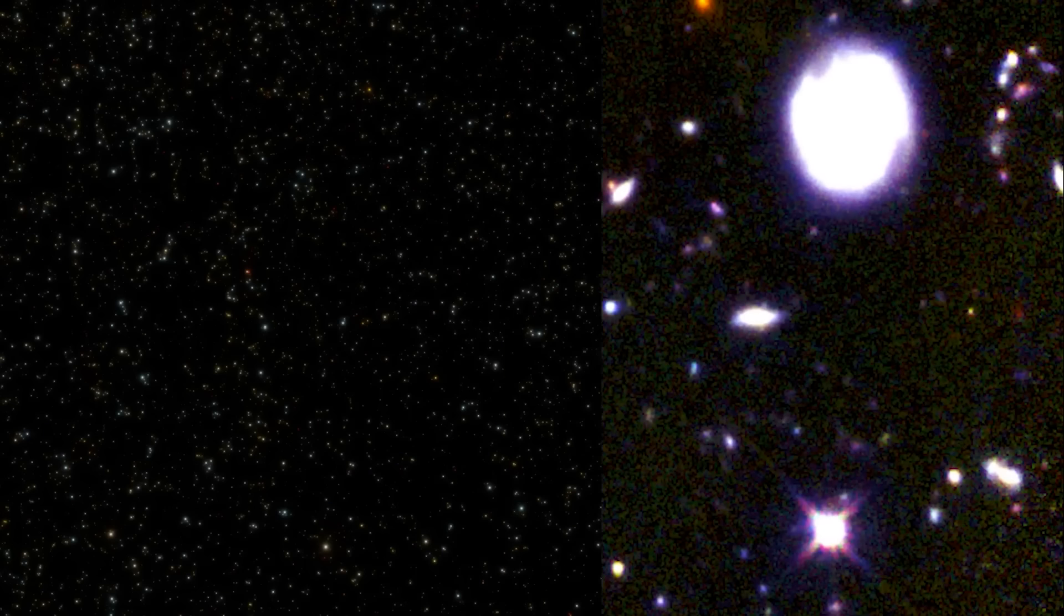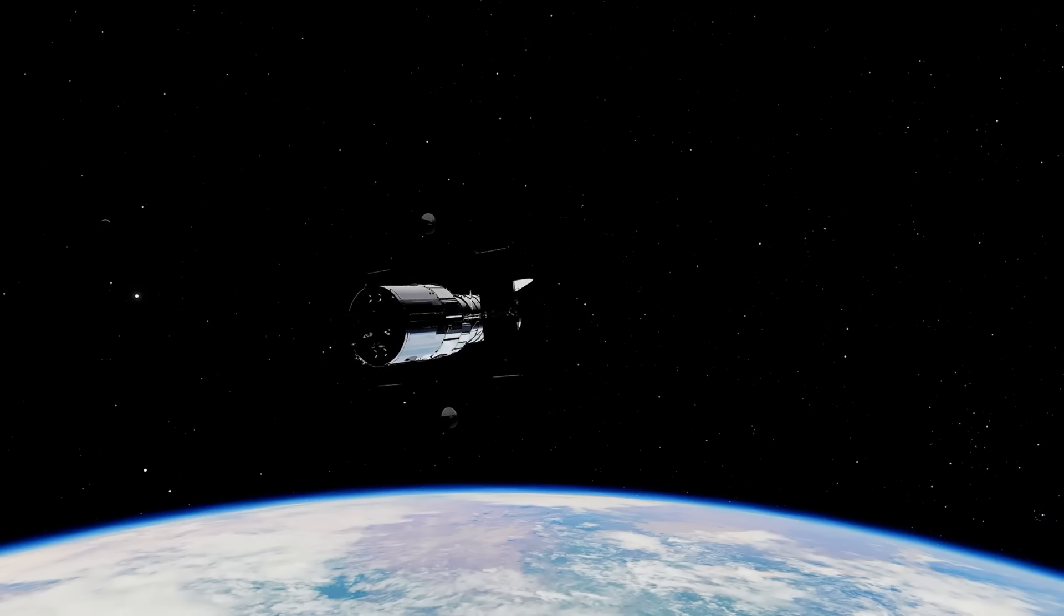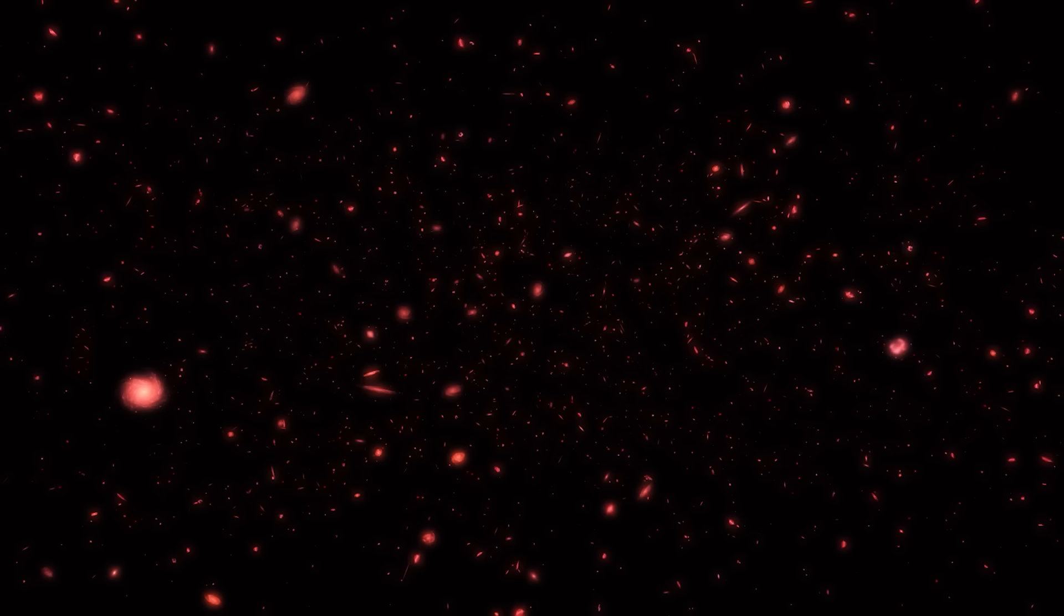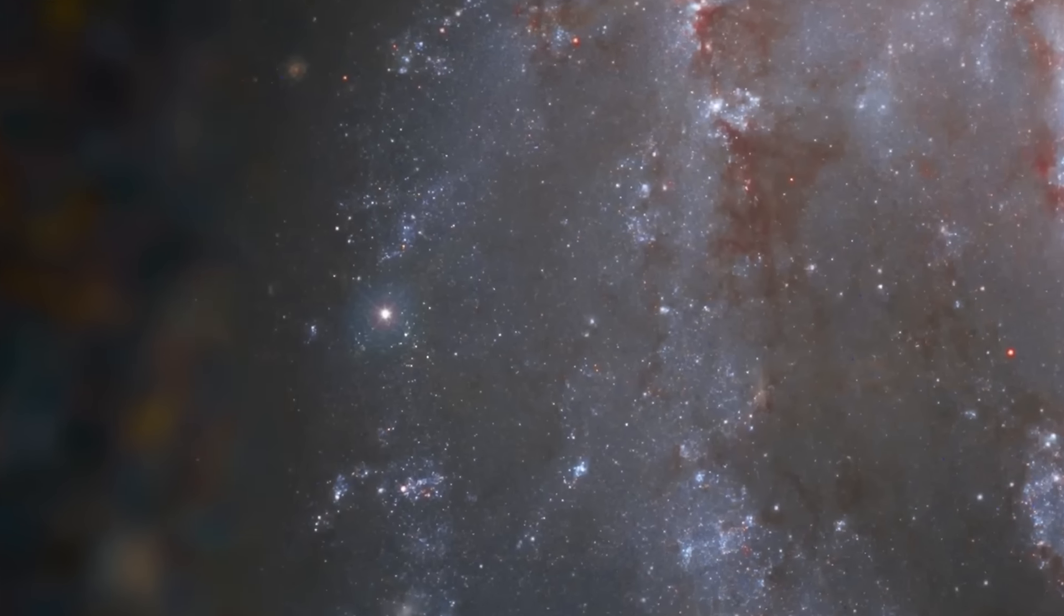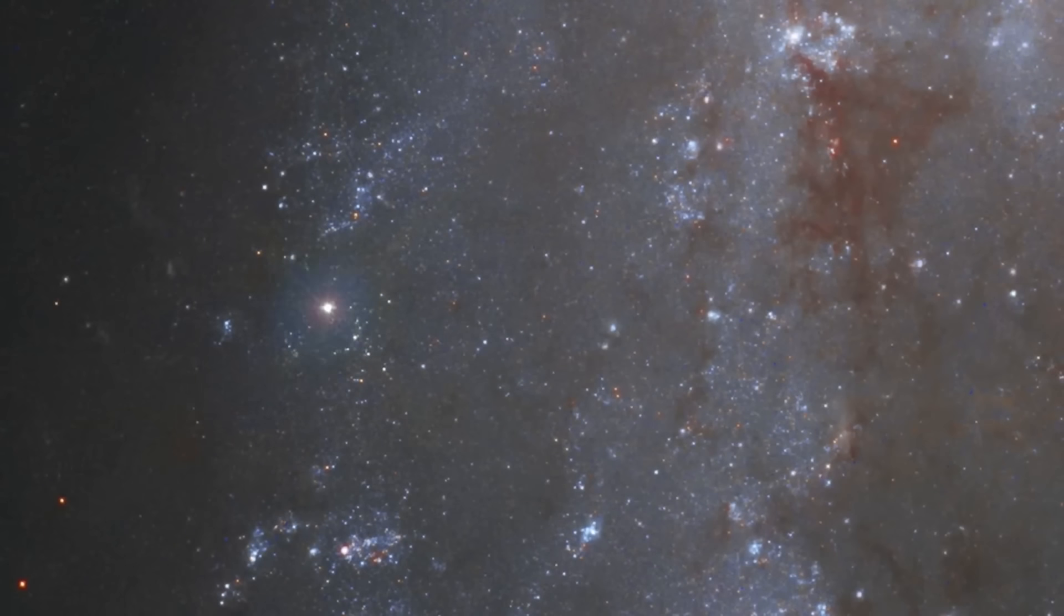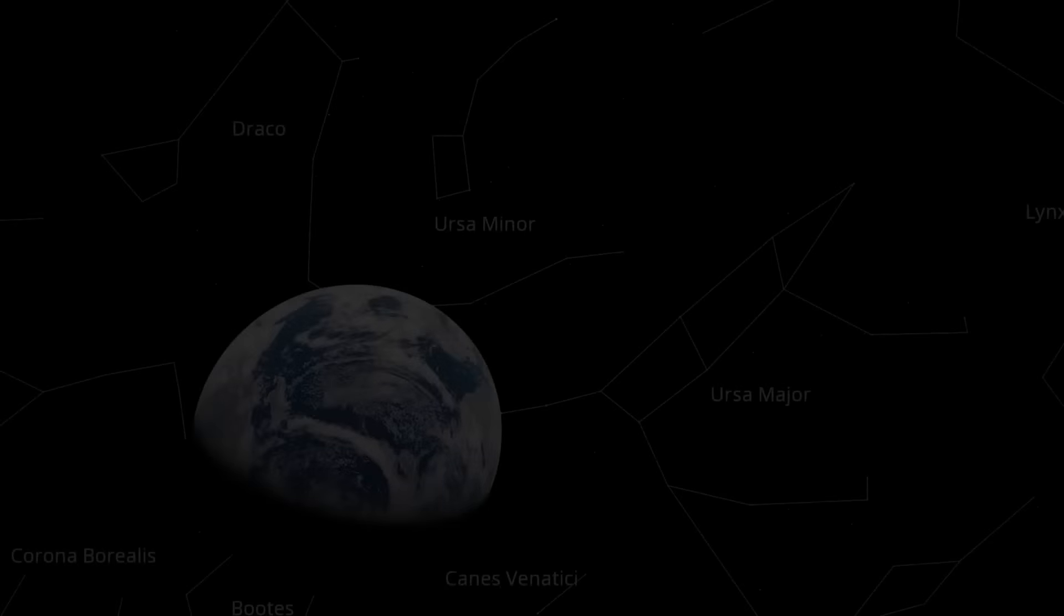Diverging from Hubble's typical luminous targets, the deep field image resulted from directing the telescope's instruments toward a minute, seemingly vacant section of the night sky, where Earth observers perceived nothing. For this to succeed, the telescope required a region with a significantly high galactic latitude to avoid obscuration by the Milky Way's core light. Consequently, a small section of the Ursa Major constellation, also recognized as the Big Dipper or the Plough, was selected.